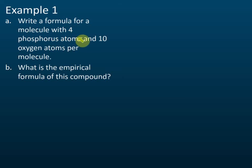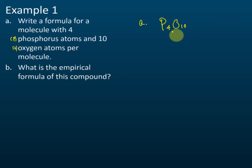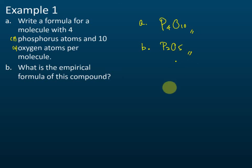Example: write the formula for a molecule with four phosphorus atoms and ten oxygen atoms per molecule. Phosphorus symbol is P, oxygen is O. The molecular formula is P4O10. The empirical formula is P2O5 — correct.